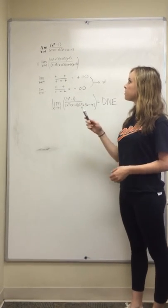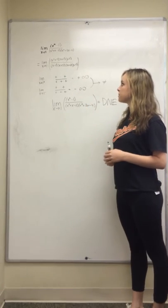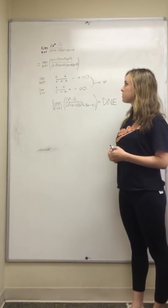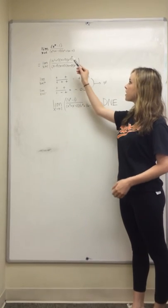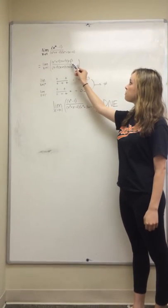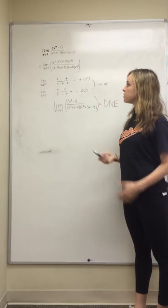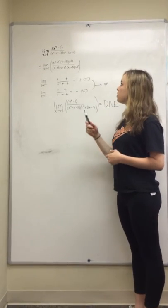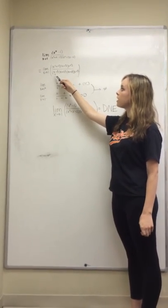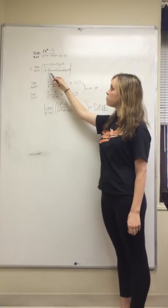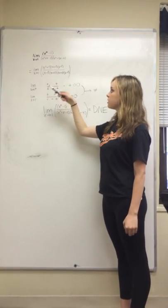When you expand the bottom, you get x minus 1, times x plus 2, times x plus 4, times x minus 1. You can cancel both the x minus 1 factors. But when you plug in 1, 1 minus 1 still equals 0, so the bottom is 0.